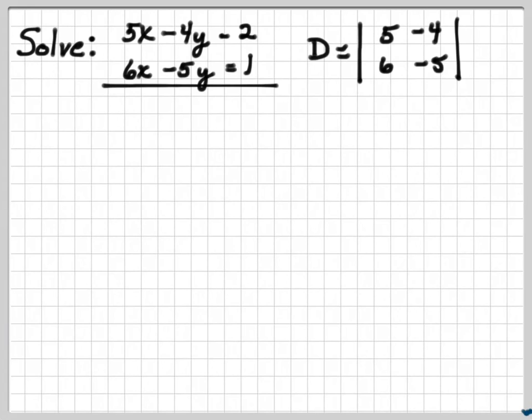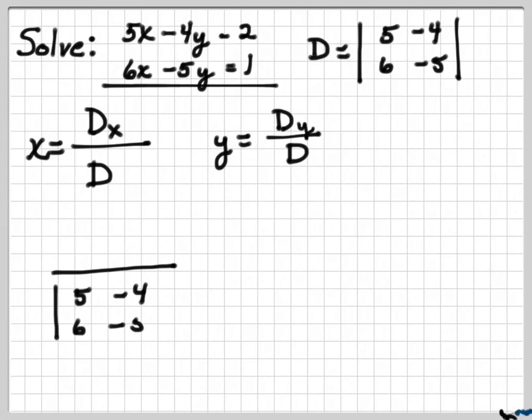So here's our equation, our main determinant is going to be 5 minus 4, 6 minus 5. And so now x is going to be the x determinant over the main determinant, and y will be the y determinant over the main determinant.